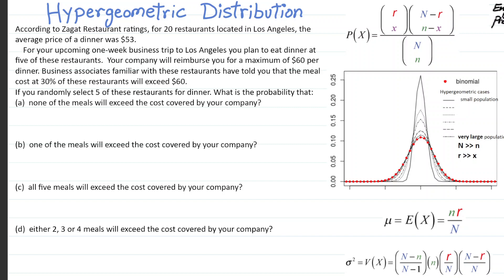The hypergeometric probability distribution is illustrated in this example with five questions. I'll talk about the formula written here and also the probability distribution plot shown as I walk through the example.